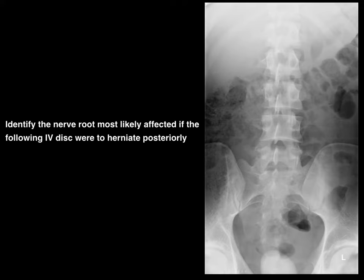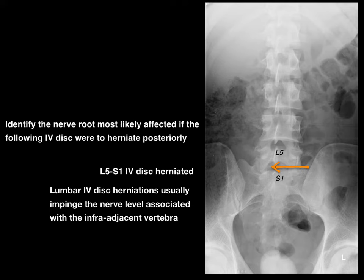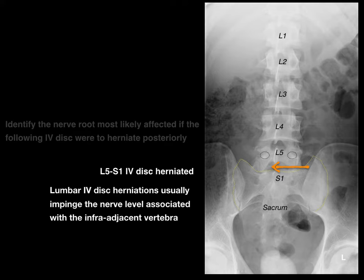Practice question: identify the nerve root most likely affected if the following intervertebral disc were to herniate posteriorly. There's the S1 vertebra and the L5 vertebra, which means that's the L5-S1 intervertebral disc herniation. A lumbar intervertebral disc herniation usually impinges the nerve level associated with the infra-adjacent vertebra — in this case, S1. There is the L5 nerve root coming down below the L5 pedicle, and there's the S1 nerve root, which is the one that's going to be hit.